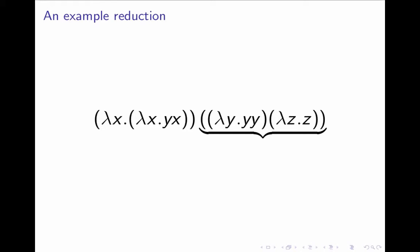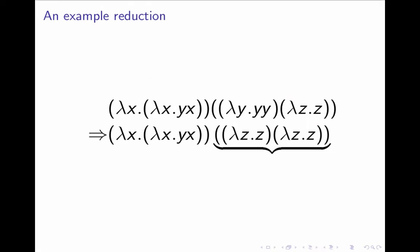and remember this is an application, this is E1, and this is E2, then we can reduce in here, we use the beta rule here, and we get that.